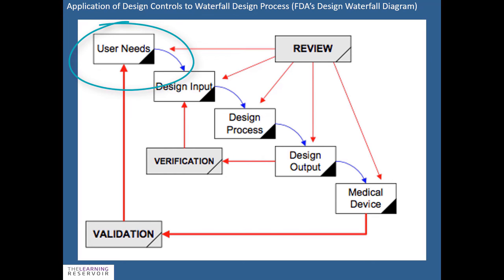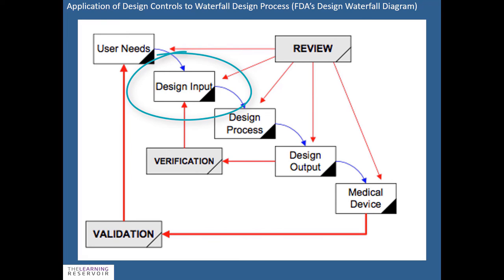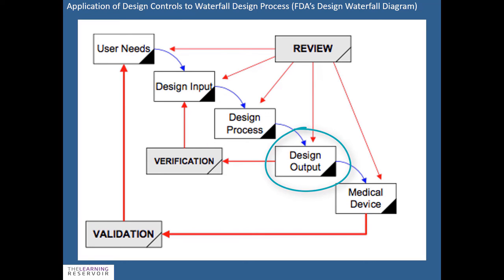We start with our user needs. For example, if you are a patient who is immobile and you need a hoist to be moved, you might say: I need a hoist that can be used in small locations. That's your user need. The design input would be the specifications for the dimensions of the hoist so it could be utilized in small spaces. Then your designers begin the design process, and the design output is the result — a translation of your design input into an actual product, your medical device.